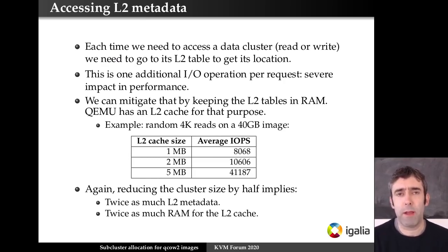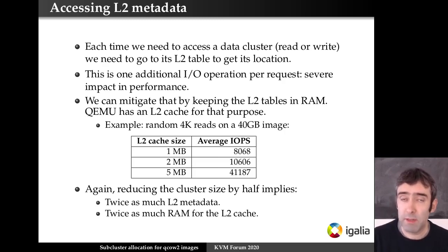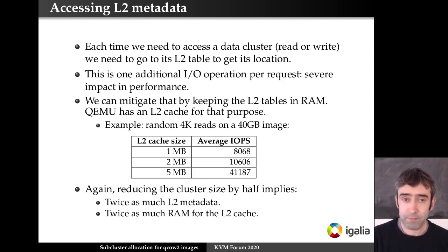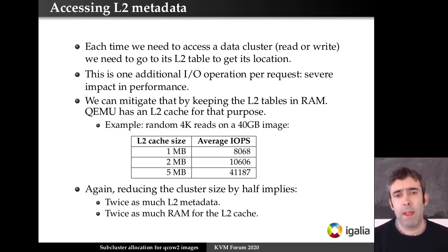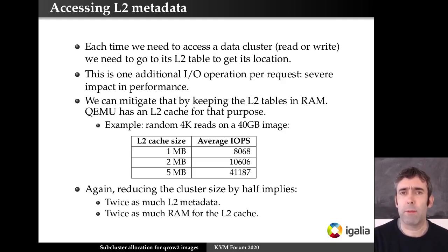Every time we need to do an I/O request from the guest, QEMU needs to go to the L2 table and get the host offset — transforming the guest offset into the host offset. That's one additional I/O operation per request, and this has a very big impact on performance. What QEMU does to minimize it is keep the L2 tables in memory — there's an L2 cache for that purpose. If we increase the cluster size, we get much more performance. In this example, the maximum cache needed is 5 megabytes and we get 40,000 operations per second.